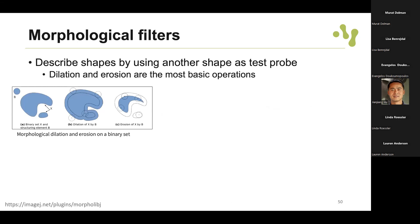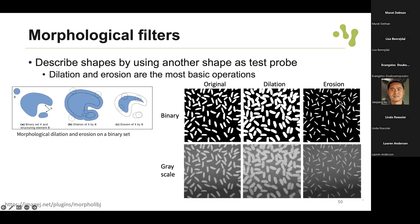There are other examples of filters - morphological filters are more related to the morphology of objects. They describe shapes by using another shape as a test probe or structuring element. If you have a binary set with a bigger and smaller component, the dilation operation will dilate the bigger component based on the smaller structuring element B. Erosion decreases the size of objects and can separate connected objects - interesting if you want to separate cells or clustered nuclei. Here are examples of both dilation and erosion for binary images and for grayscale images.